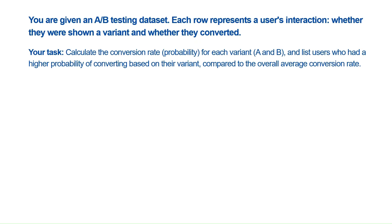Specifically, you need to find users who have a higher probability of getting converted compared to the overall average conversion rate. So we need to identify which variant performs better than average, and return those users.